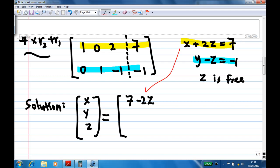From the first equation, x equals 7 minus 2z, and y equals z minus 1, and z is free, where z is any real number. So this is the equation of the straight line formed by the intersection of the two planes.